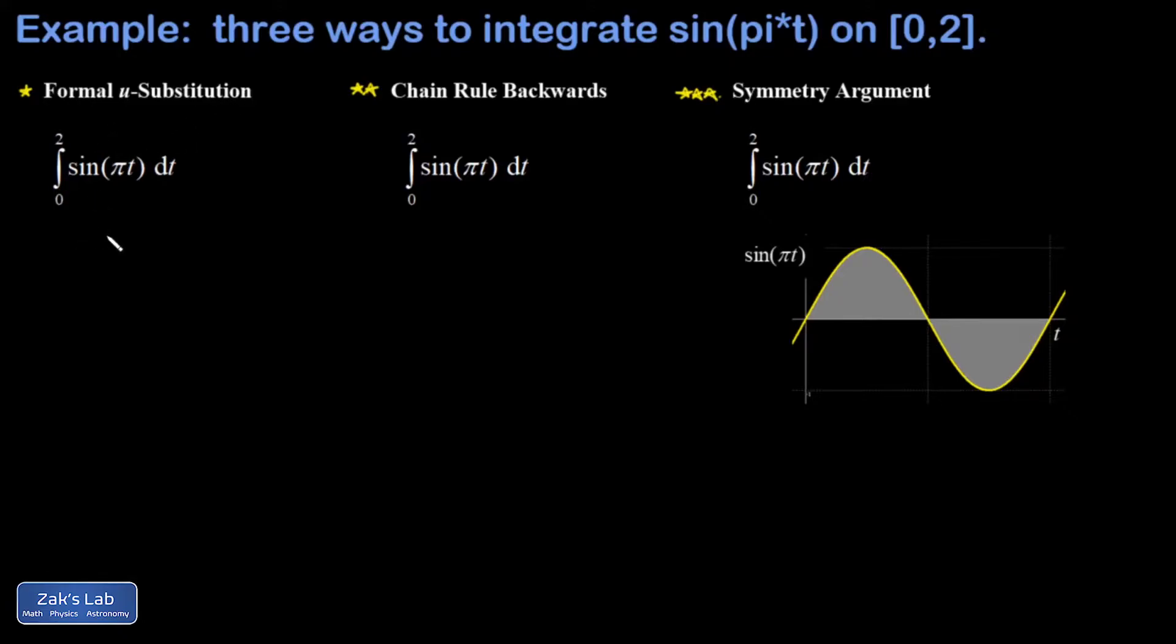Let's take a look at the formal u substitution method. I start by saying let u equal pi t, the argument of the sine function there. Then I find the differential of that and prepare myself to transform my original differential of dt.